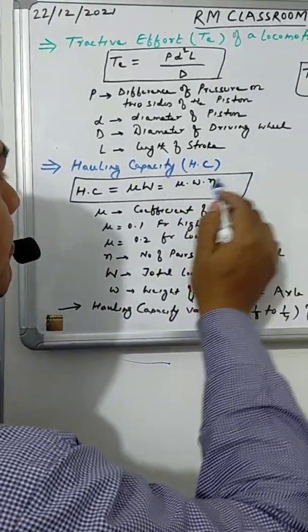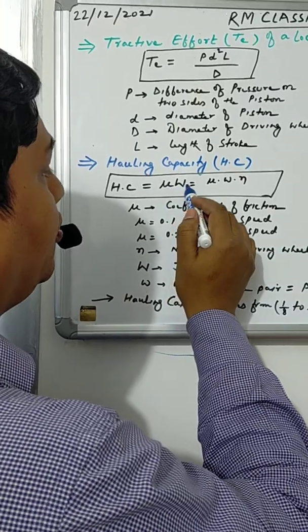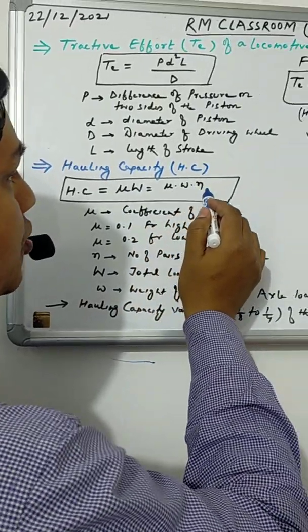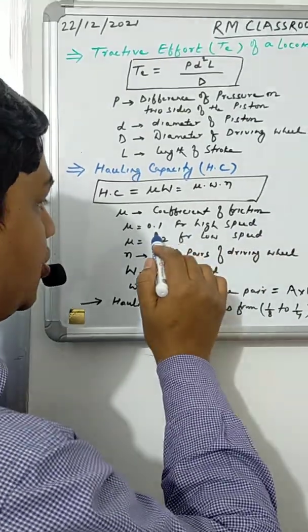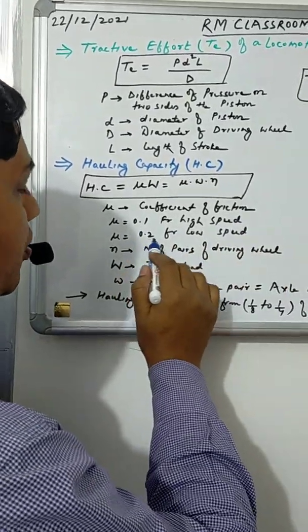Hauling capacity of a locomotive can be computed by this expression: μ × W or μ × w × n, where μ is the coefficient of friction. For high speed rail we can take it as 0.1, and for low speed rail it is 0.2.